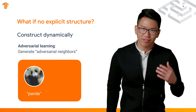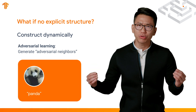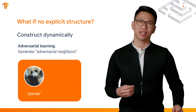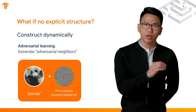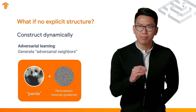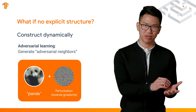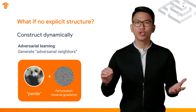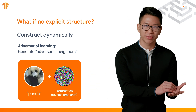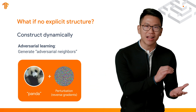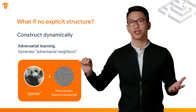The next question is: how do we generate such adversarial neighbors? We craft a small amount of carefully designed perturbation, usually based on the reverse gradient direction, and apply that perturbation to the original sample.